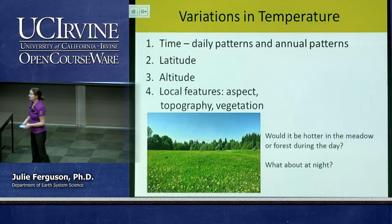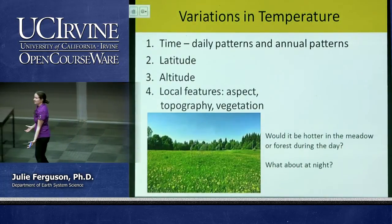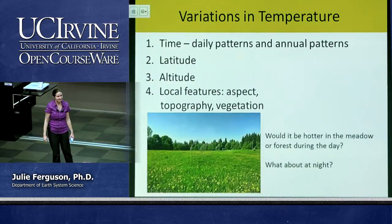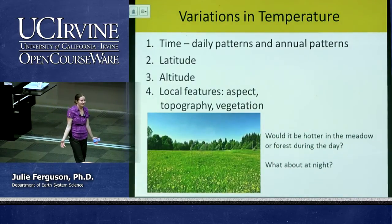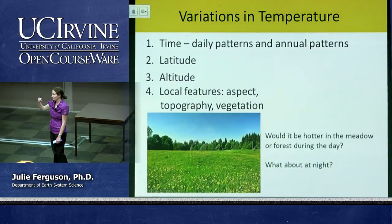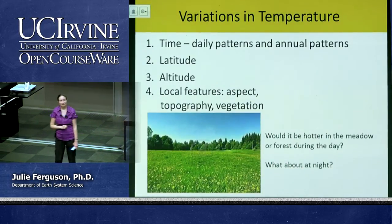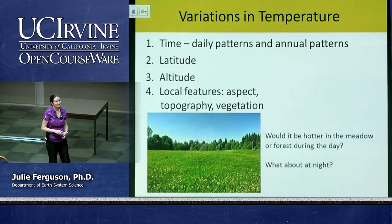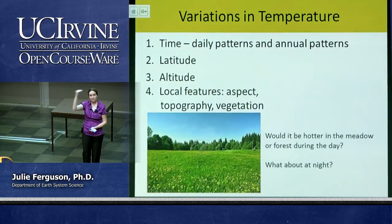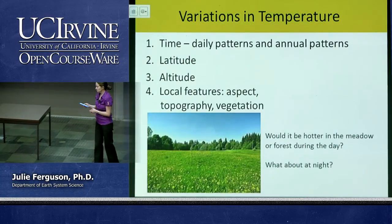Vegetation itself can affect local temperatures. During the day, it would be hotter in an open grassy meadow than in a forest, because the trees absorb incoming energy and shade the ground. But at night, it's warmer in the forest — the trees absorb outgoing radiation from the ground and prevent it from escaping, keeping temperatures higher. So vegetation has a significant role in controlling local temperatures both day and night.